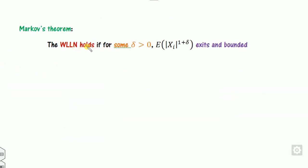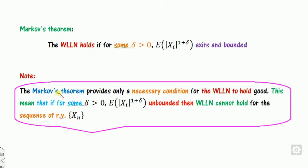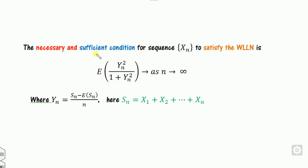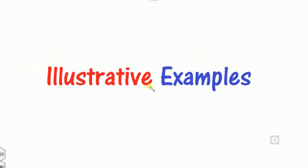The Markov theorem states that the weak law of large numbers holds if E[|x_i|^(1+delta)] exists and is bounded. Note that the Markov theorem provides only a necessary condition: if this quantity is unbounded, the weak law cannot hold. Another necessary and sufficient condition is that the sequence x_n is uniformly bounded. There is also another necessary and sufficient condition involving y_n = (S_n - mean)/n, where S_n is the sum. We will explore these with numerical examples.